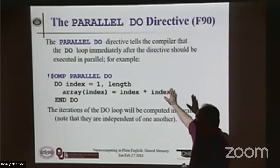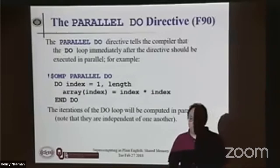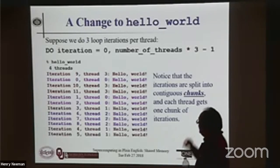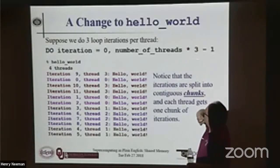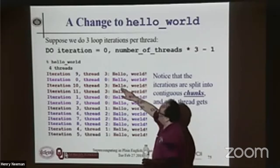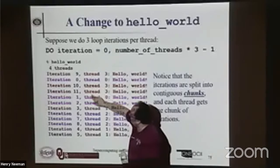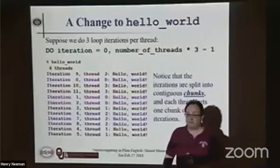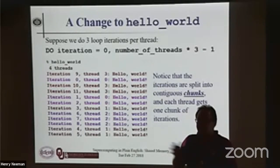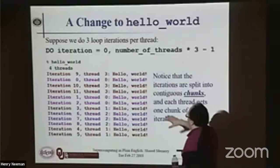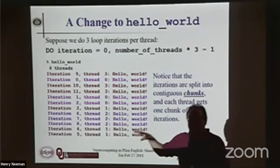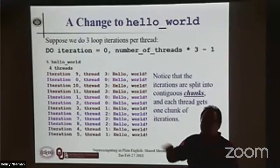Suppose we want to do three iterations per thread. What happens is: among the threads they happen in random order, but within each thread they happen in the correct order. The sets of iterations are split up into chunks, and each thread iterates through the subset belonging to its chunk. In this particular case: thread 0 got iterations 0, 1, 2; thread 1 got 3, 4, 5; thread 2 got 6, 7, 8; thread 3 got 9, 10, 11 — exactly what you'd predict. We took 4 threads, 12 iterations, and just split them up.